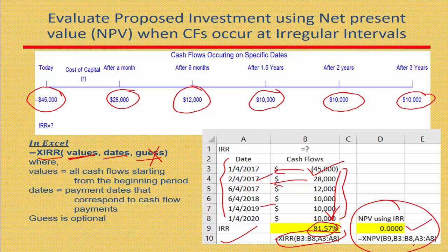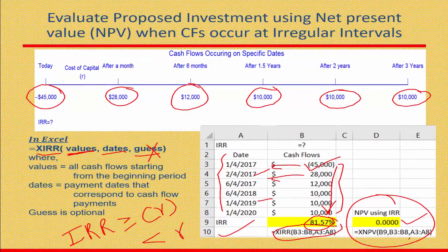Lastly, how do you make the investment decision? You always compare your IRR with the cost of capital, which we typically denote as R. If IRR is greater than or equal to R, then this project is profitable. If IRR is less than R, that means your cost is more than the return on the investment, and you don't undertake that kind of investment.